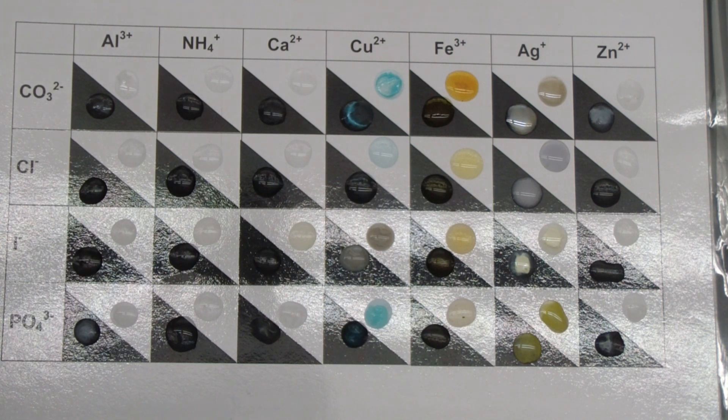So how exactly do we know if a particular compound is going to be soluble or insoluble? Well, for that, we're going to use something called a solubility chart. So let's zoom on over and take a look at that.